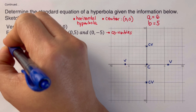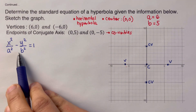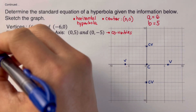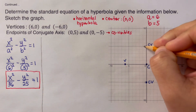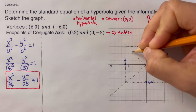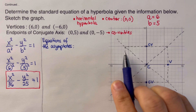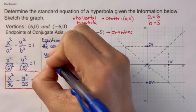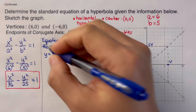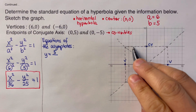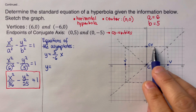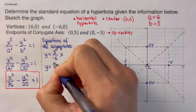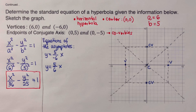Since we already have A = 6 and B = 5, we plug them in and write the standard equation of this hyperbola. Now let's draw the rectangle and the two asymptotes using the two vertices and two co-vertices. The asymptote with a negative slope is y = −(5/6)x — we go up 5 and 6 to the left. The other asymptote with a positive slope is y = (5/6)x — we go up 5 and 6 to the right. These are the equations of the two asymptotes.